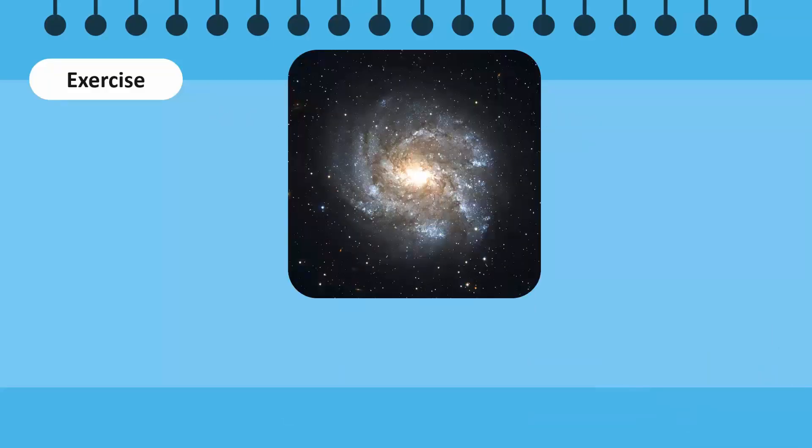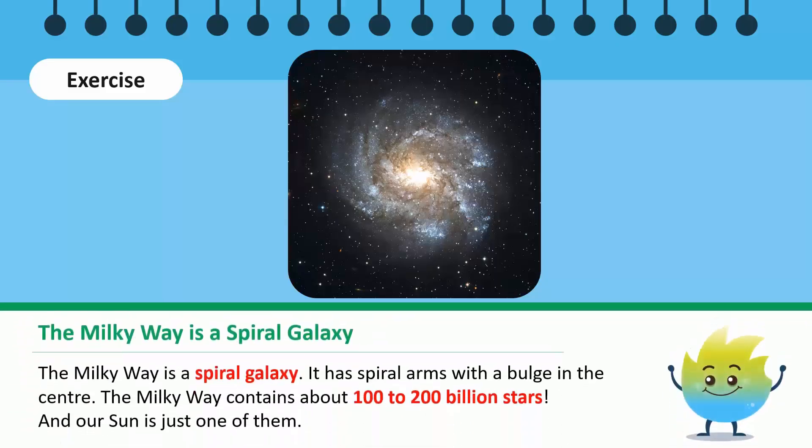Our galaxy, the Milky Way, is a spiral galaxy. You can see the spiral arms with a bulge in the center. The Milky Way contains about one hundred to two hundred billion stars, and our Sun is just one of them.